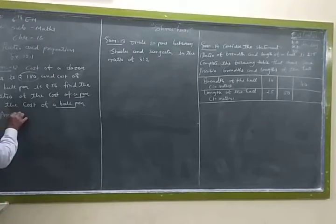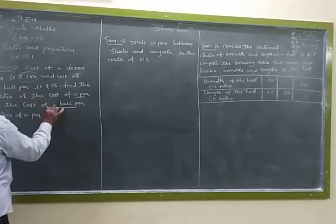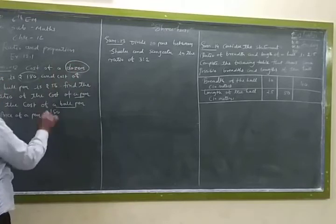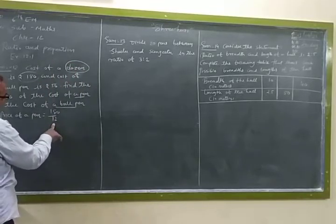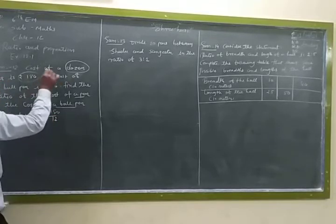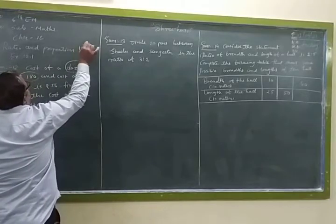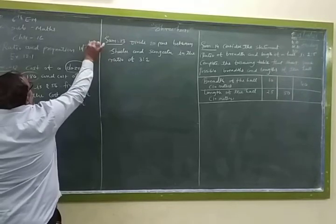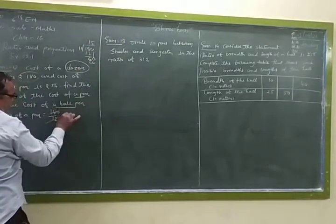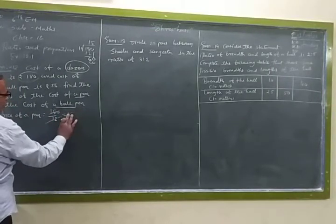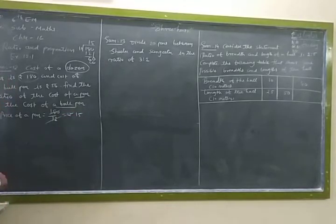Therefore, price of a pen is equal to 180 divided by 12. How? Because one dozen is equal to 12 pieces. Now divide 12, 180 divided by 12. 12, one jai, 12. 8 minus 2, 6, 0 down. 12, five jai, 60. Answer is 15. The price of a pen means one pen is Rs. 15.